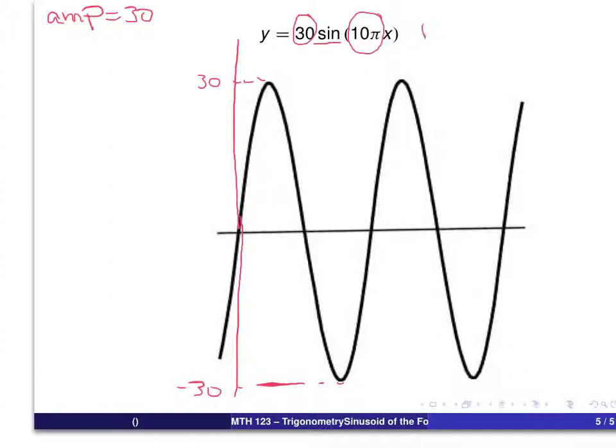And in fact, we know that the period will be 2 pi divided by 10 pi. And as we can see, in that setup, the pi's cancel, and 2 tenths is also equal to 1 fifth. So the period is 1 fifth.